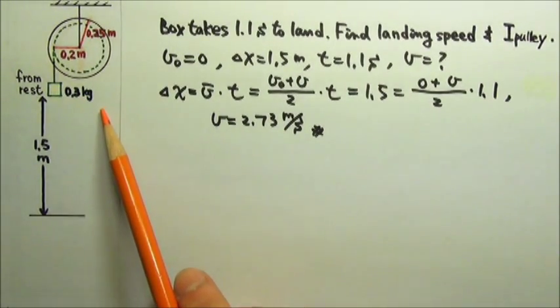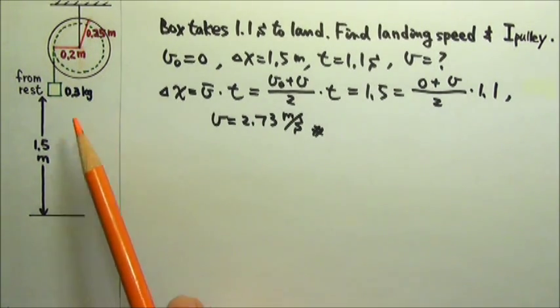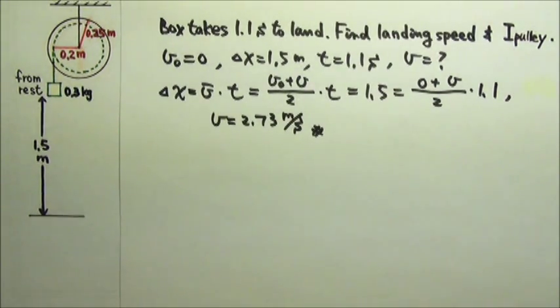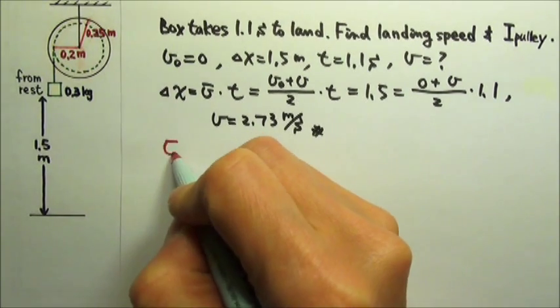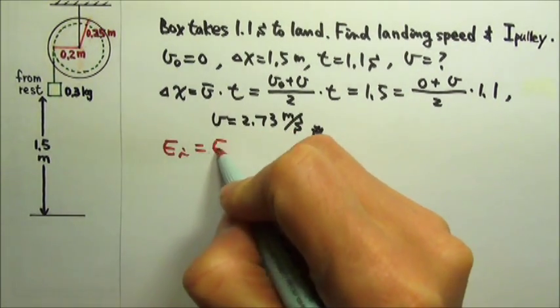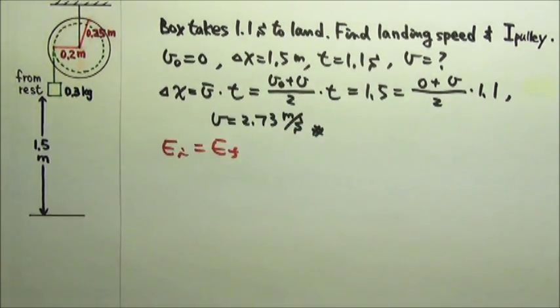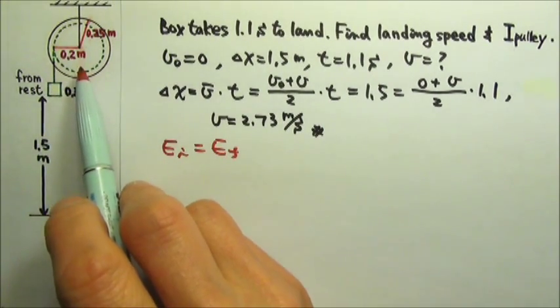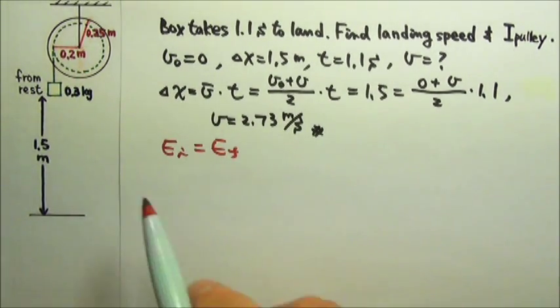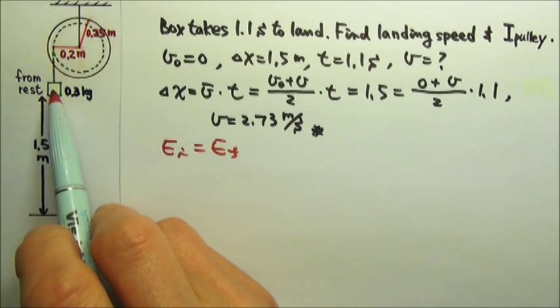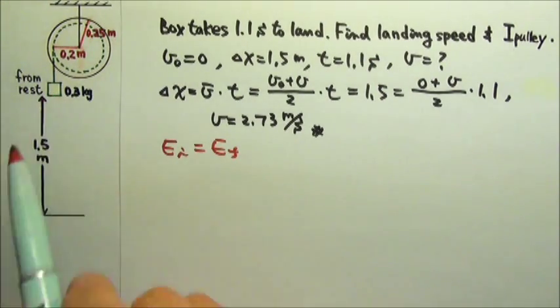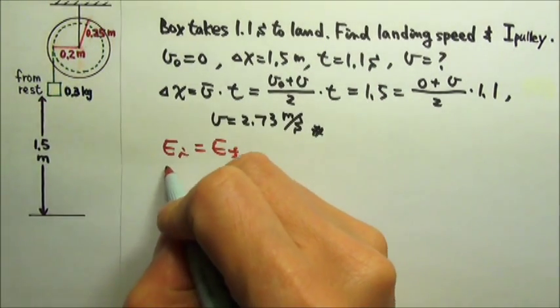There's no friction or air resistance to take the mechanical energy away, so we should have E initial equals E final. The system starts at rest, so there's no kinetic energy. But it starts out with a box that's up high, so it starts with MGY.